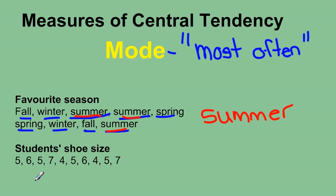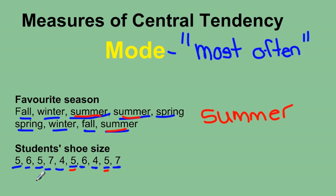Looking at the next one — it's students' shoe sizes; they took a survey in their class. There are four size-five shoes, two sixes, two sevens, and two fours. So the one that occurred most often was size five, because there were four people with a size five. The mode of this data would be size five.